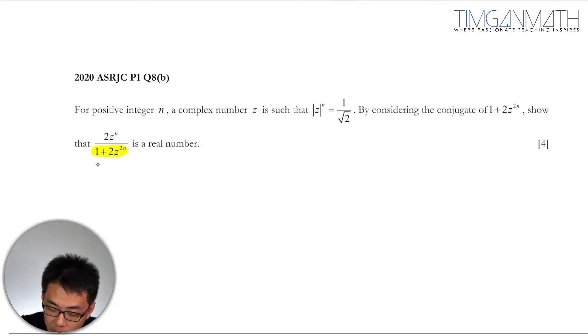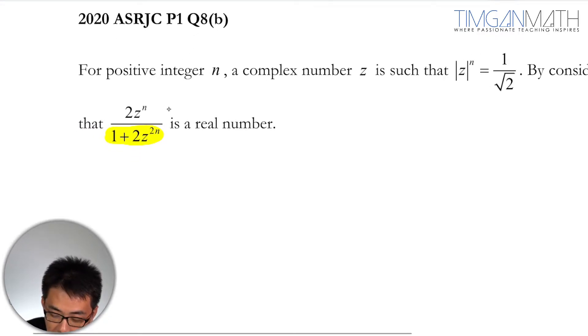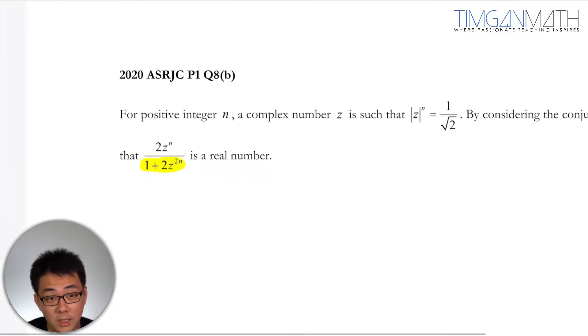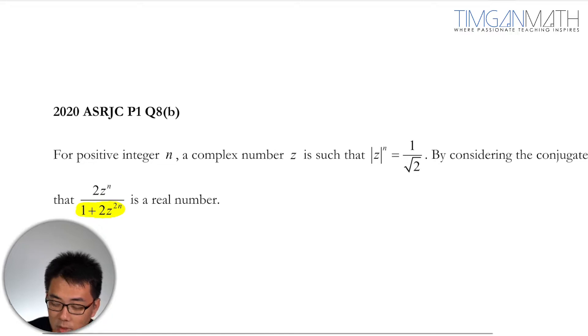Now we need to consider the conjugate of this complex number here. So the first thing is to understand: to show that this is real, we need to show that the imaginary part is zero. And also we need to know that the conjugate pair, the reason why we need to multiply a conjugate pair is because by multiplying with any conjugate pair when they are multiplied by each other, they will get you a real value.